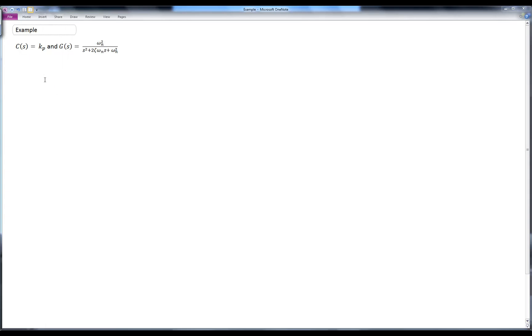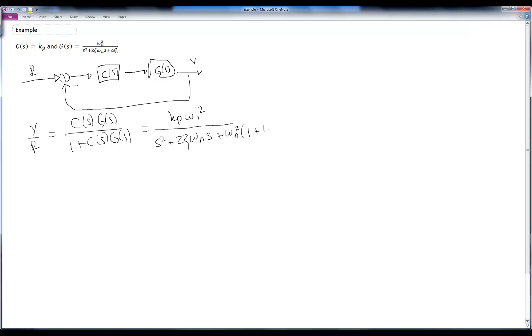We can certainly draw the block diagram for this system, and we use a series compensator with unity feedback with a minus sign. And we can write down the closed loop transfer function as we normally would. We have a forward path divided by 1 plus c of s times g of s. And after some work, we end up with kp omega n squared all over s squared plus 2 zeta omega n s plus omega n squared times 1 plus kp.